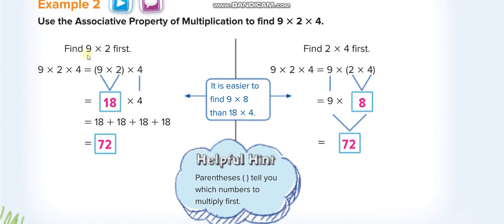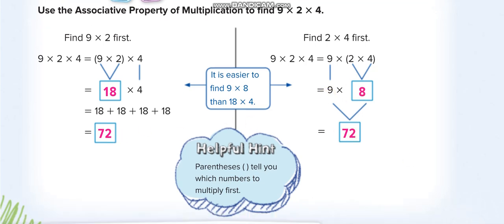On the next page: nine times two times four. First way — group nine and two: nine times two is eighteen, bring the four down, eighteen times four is seventy-two. Second way — group two and four: two times four is eight, nine times eight is seventy-two. We get the same answer.